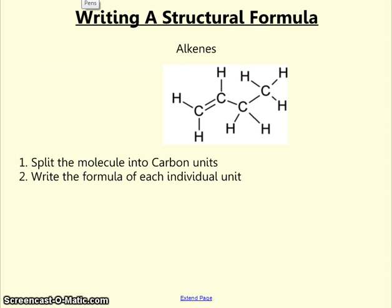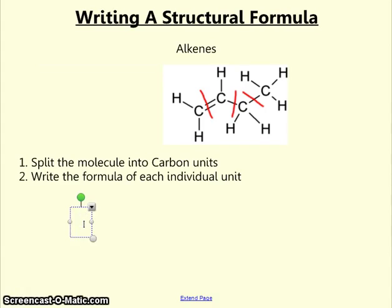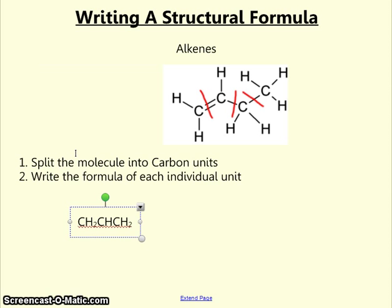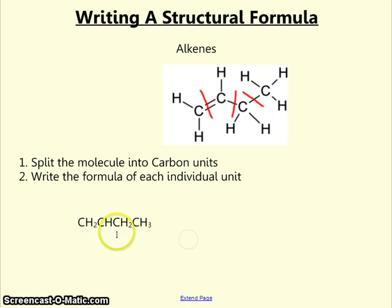Alkenes. Again, very similar to alkanes — you split the molecule up into the individual carbon units and write down the formula of each unit. Carbon number one of the alkene is CH2, followed by CH, followed by another CH2, and finally CH3. That is the formula of but-1-ene.